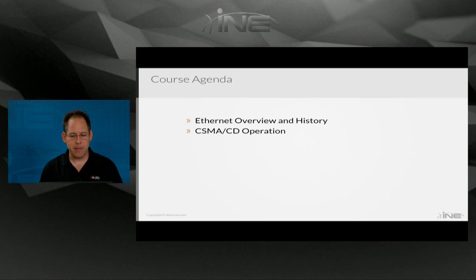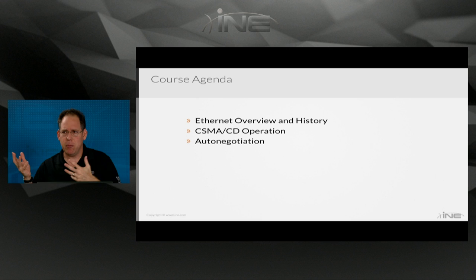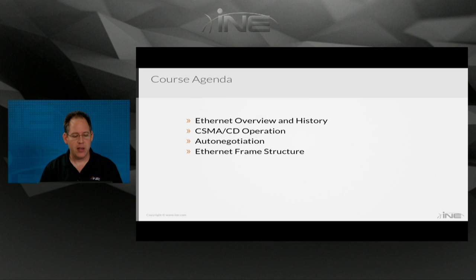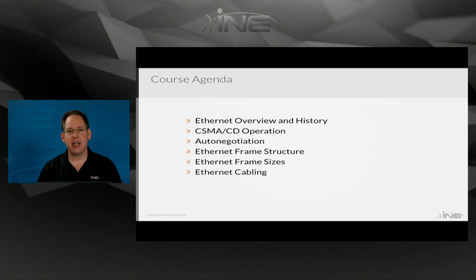We'll talk about auto-negotiation — something that happens in the background that you can't really influence, but it's worth understanding what it's actually doing. Then we'll look at the Ethernet frame structure, discuss Ethernet frame sizes including things like runts, giants, and jumbo frames, and finish up with Ethernet cabling types.